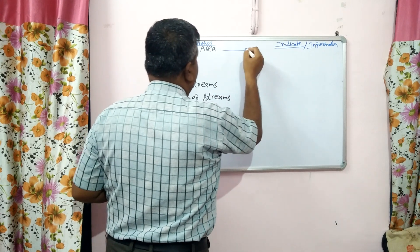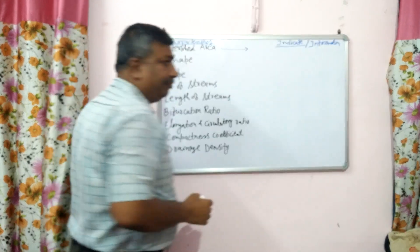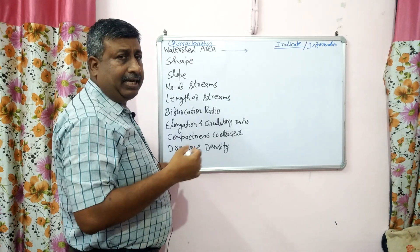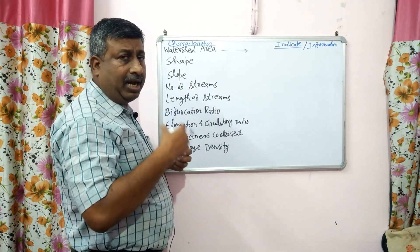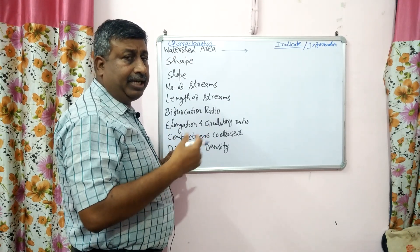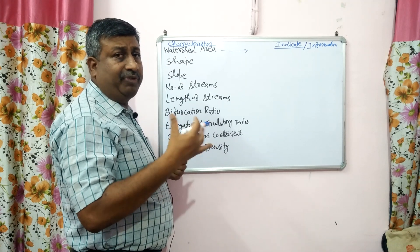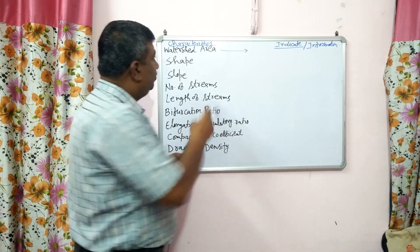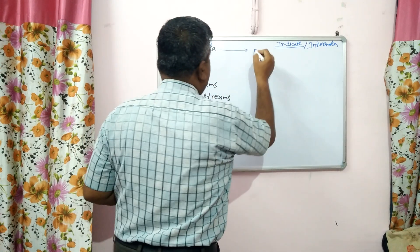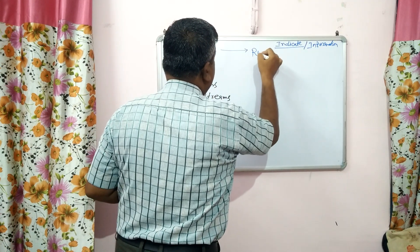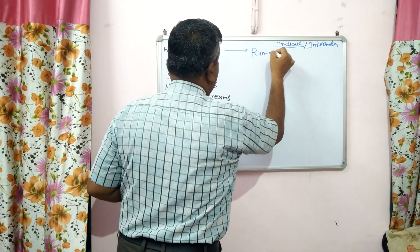The first one is watershed area. If watershed area is large, then runoff volume will be more. So watershed area indicates the runoff volume.